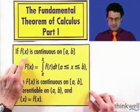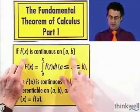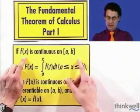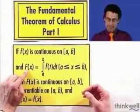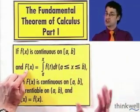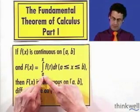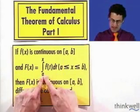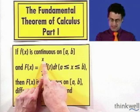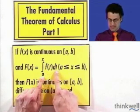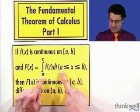Let me actually state the theorem, which I have to admit doesn't sound very exciting, but when we think about what it means, we're going to get really excited. So suppose we have a function f(x) that's continuous on some closed interval from a to b. And I define a new function, capital F(x), which is going to be the integral from a fixed number a all the way up to x of f(t) dt. And x is going to vary anywhere between a and b.